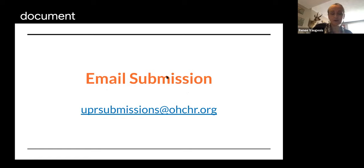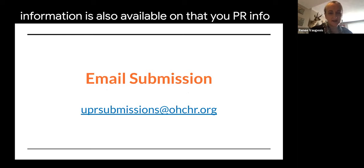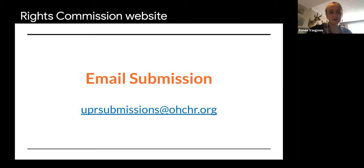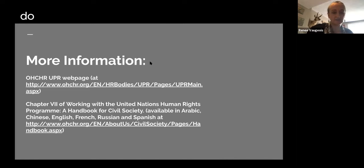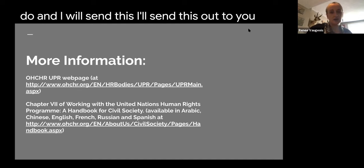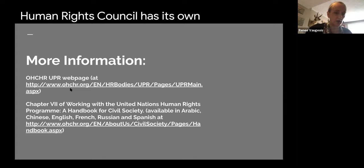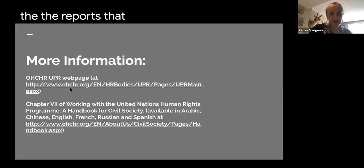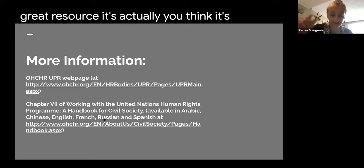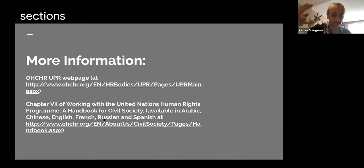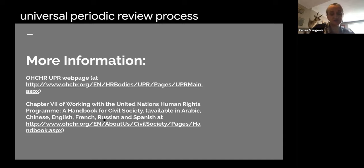The submission process is super simple — you just email it in as a Word document. This information is available on the UPR Info website and the Office of the Human Rights Commission website. The UN has also published a handbook for civil society on shadow reporting, which is quite large and includes information on how to report to convention committees as well as the Universal Periodic Review process — a really good overall resource.